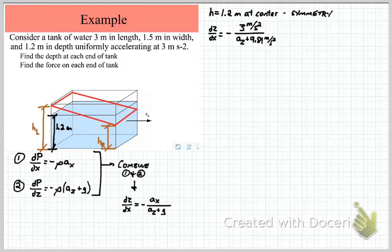So given the equation that we know and the accelerations, we can assume there's no other z-directed acceleration since we're not given any, we can find that the slope of the water surface profile is minus 0.306 meters per meter. And so now we know something about the geometry of the problem.